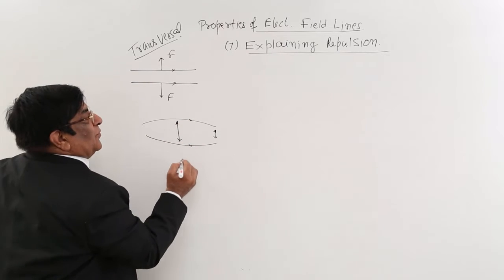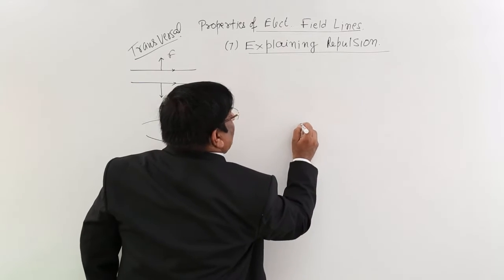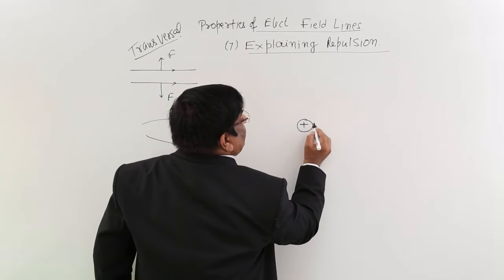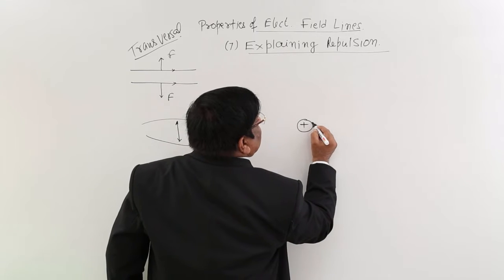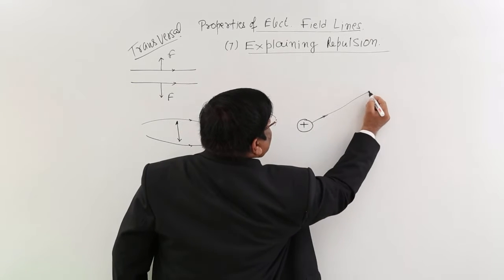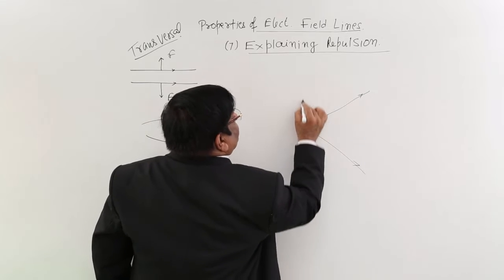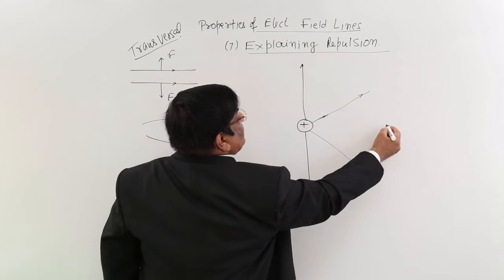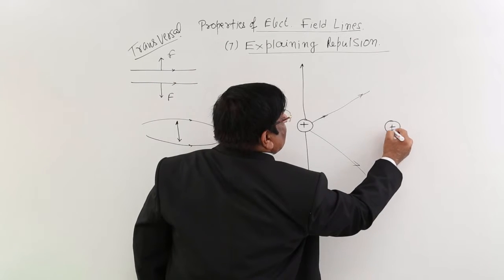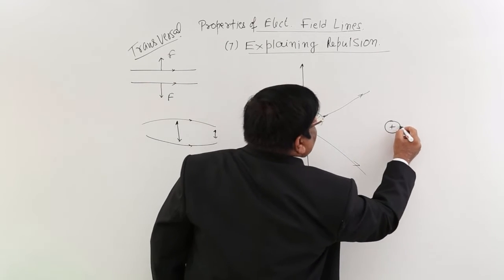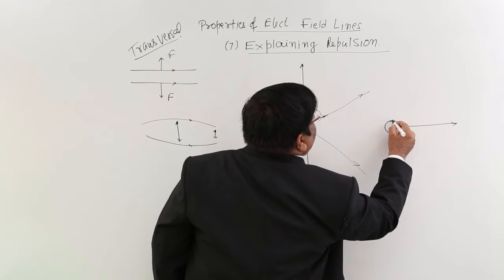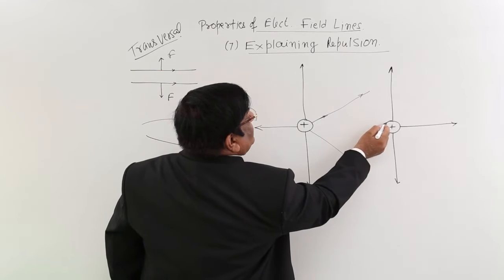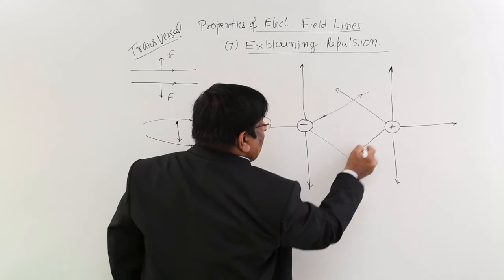When we put two positive charges — one positive charge here — the electric field lines go outward in all directions. If I put another positive charge here, that charge also has field lines going out in all directions.